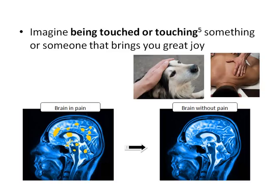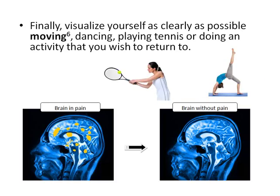Imagine being touched or touching something or someone that brings you great joy. That could be your pet, it could be being touched either sensually or therapeutically. Finally, visualize yourself as clearly as possible moving, dancing, playing tennis, or doing an activity that you wish to return to.